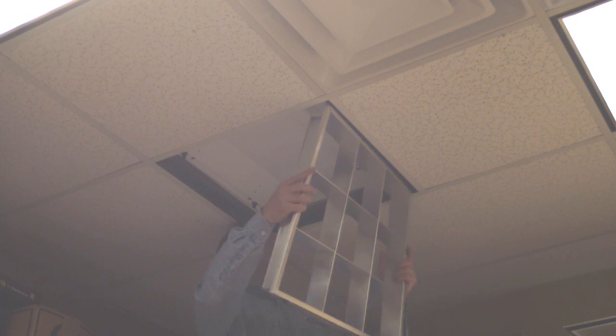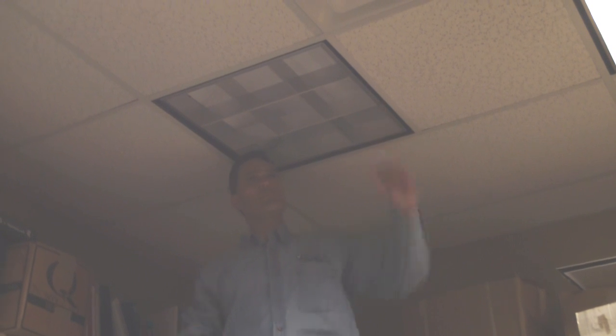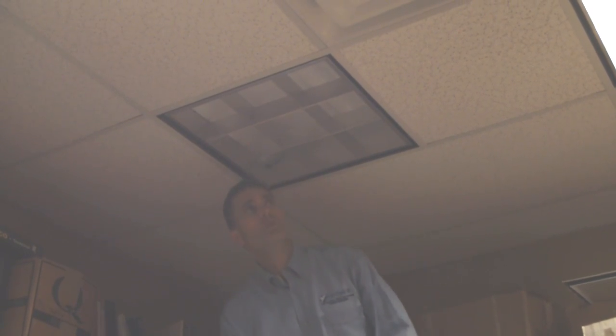And now you simply install your parabolic light, activate the spring-loaded clips, and you're done. No tools, no electrician. Two foot by two foot version also comes in a two foot by four foot version. Glenn for 1-800-ceiling.com for the parabolic retrofit kit.